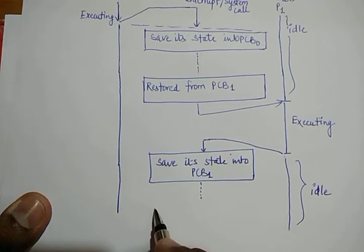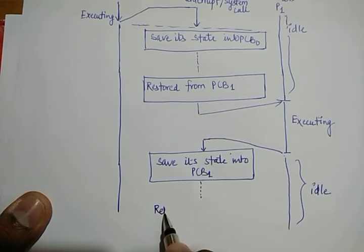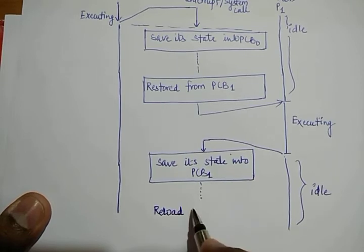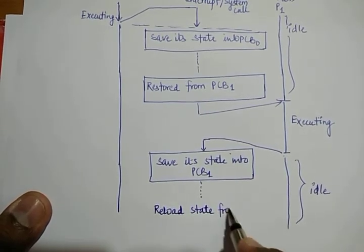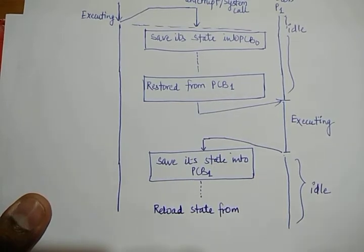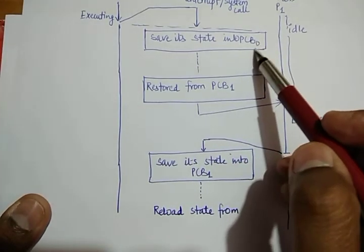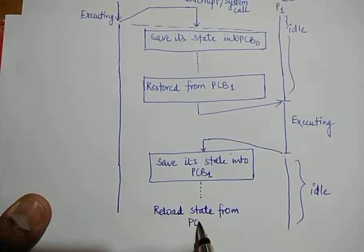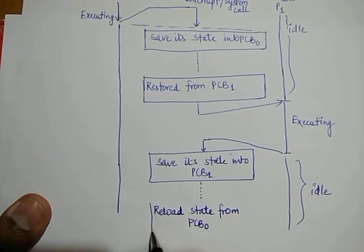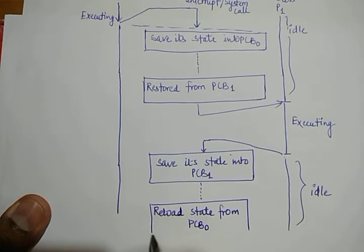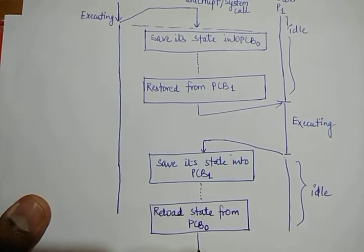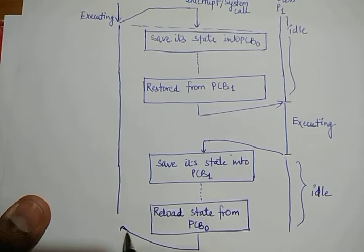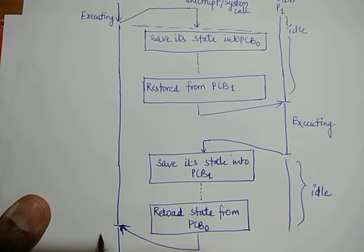Now suppose process P0 wants to execute again. It will reload its state from where it had saved it — from PCB0. It will restore its state information from PCB0 and start its execution from that point.